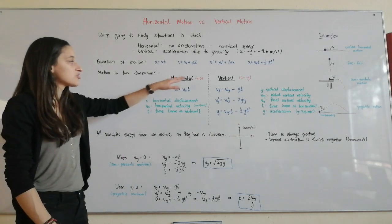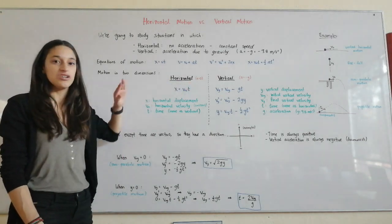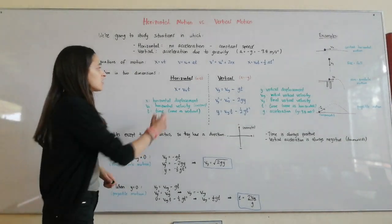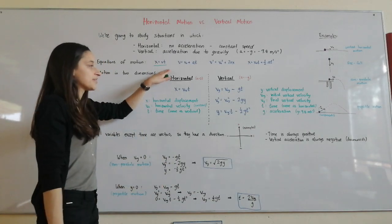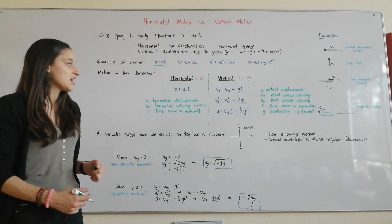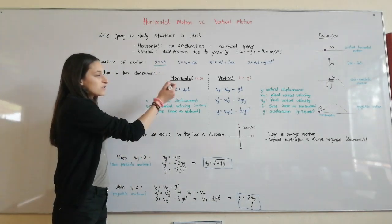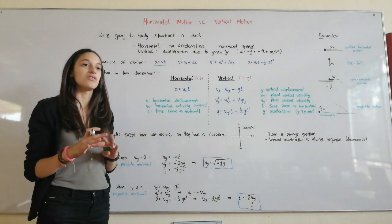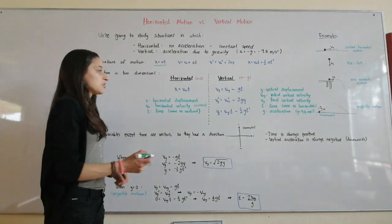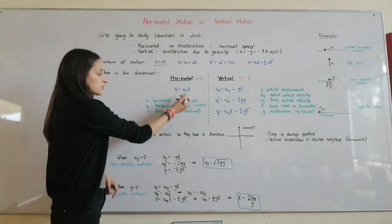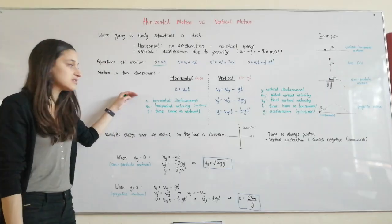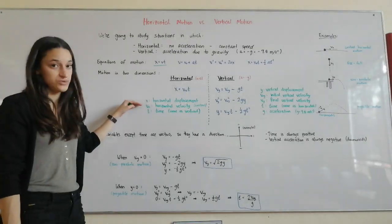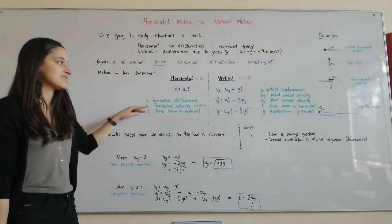Because horizontal motion has no acceleration — it's constant speed — we're only going to use the equation that has no acceleration, which is x equals vx times t. In this equation, x is the horizontal displacement, vx is the horizontal velocity, which is constant, and t is the time.